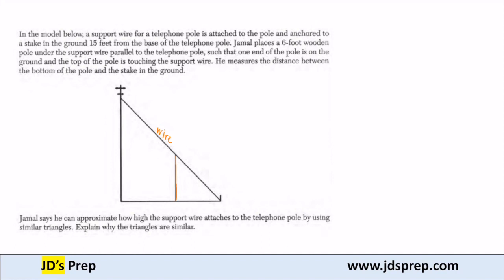Jamal says he can approximate how high the support wire attaches to the telephone pole by using similar triangles. Explain why the triangles are similar. So in order to best illustrate and explain this, let's go ahead and just label some angles.